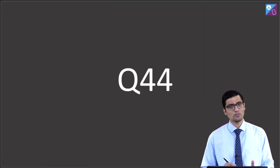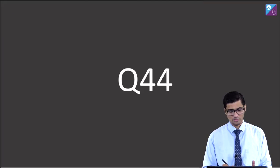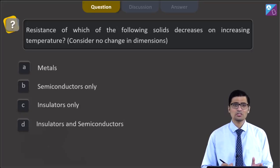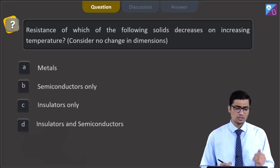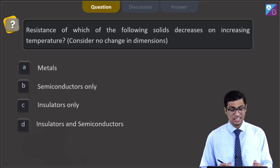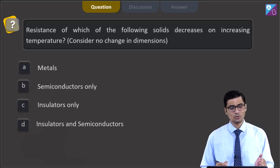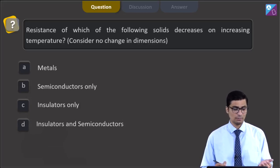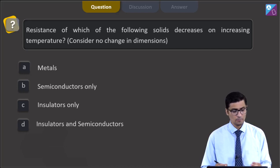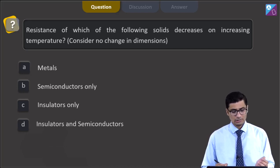This is question 44. The question states: resistance of which of the following solids decreases on increasing temperature? Consider no change in dimensions. The options are: metals; semiconductors; insulators only; or insulators and semiconductors.